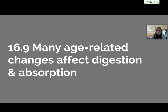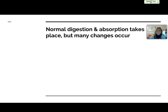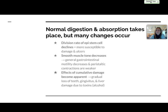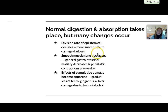Section 16.9 talks about age-related changes that affect the digestion and absorption of food entering the body. Normal digestion and absorption will continue to take place, but there will be some changes and basically some weakening and slowing down. For example, the division rate of the epithelial stem cells declines. Therefore, elderly people are more susceptible to damage to the tissues of the lining of the stomach and other organs, as well as ulcers.